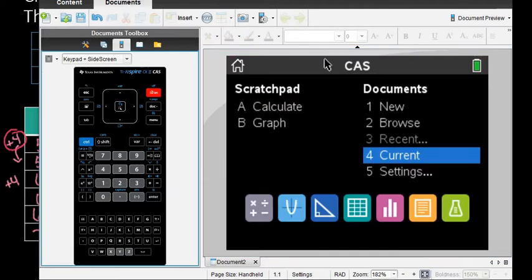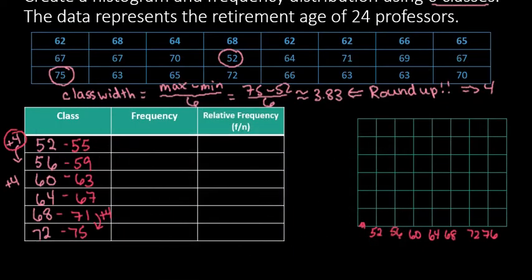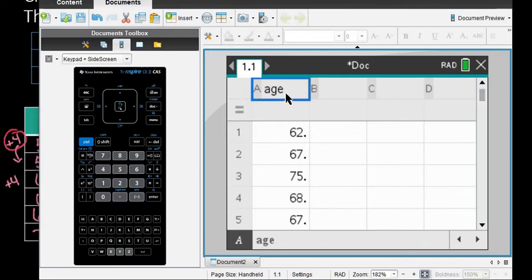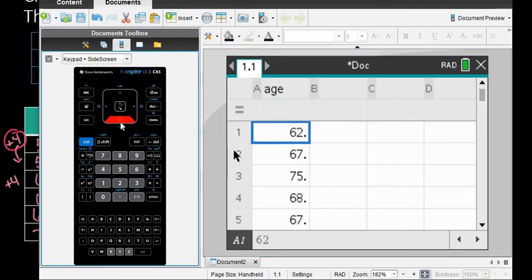If you'd like, pause the video to enter the data on a spreadsheet screen. I titled my variable as age, then simply hit the number 62 and enter, then type down until you get all 24 values in.